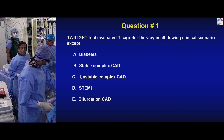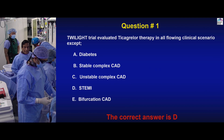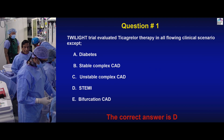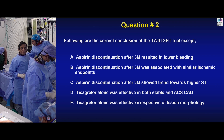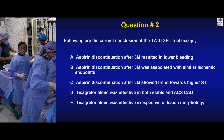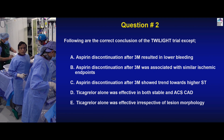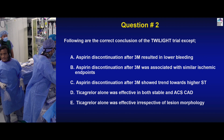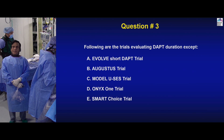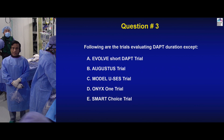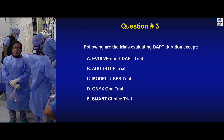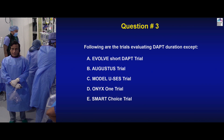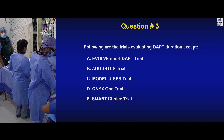Now quiz questions: The Twilight trial evaluated Ticagrelor therapy in all following clinical scenarios except: diabetes, stable complex CAD, unstable complex CAD, STEMI, and bifurcation CAD — clearly it was not a STEMI trial. Second question: correct conclusions of Twilight except — aspirin discontinuation after 3 months showed a trend towards higher stent thrombosis. The answer: there was no difference in stent thrombosis. And finally: trials evaluating DAPT duration — all listed except Augustus, which was the Apixaban trial with aspirin vs. no aspirin randomization.